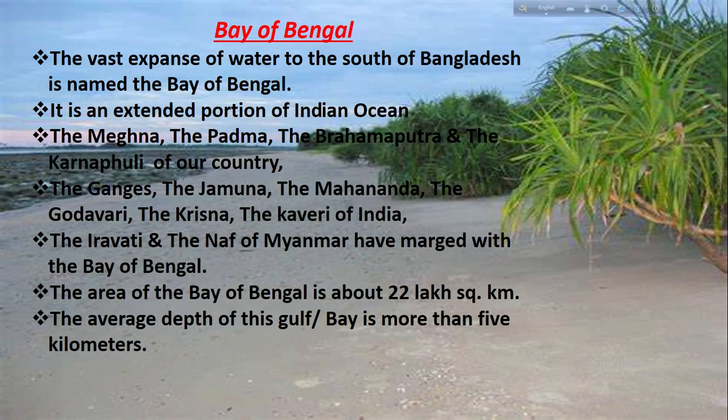The Meghna, Padma, Brahmaputra and Karnafuli of our country have merged into the Bay of Bengal. The Ganga, Jamuna, Mahananda, Godavari, Krishna and Kaveri of India, and the Irrawaddy and Naf of Myanmar have all merged with the Bay of Bengal. The area of the Bay of Bengal is about 22 lakh square kilometers, and the average depth of this gulf is more than 5 kilometers.